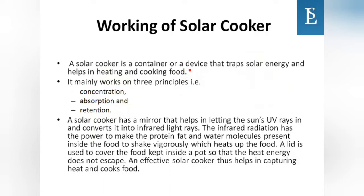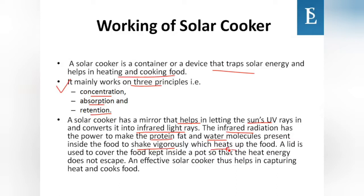A solar cooker is a container or device that traps solar energy to heat and cook food, working on three principles: concentration, absorption, and retention. A mirror converts the sun's ultraviolet rays into infrared light rays, which cause protein, fat, and water molecules in the food to vibrate vigorously and heat up. A lid covers the food to prevent heat from escaping, making the solar cooker effective.